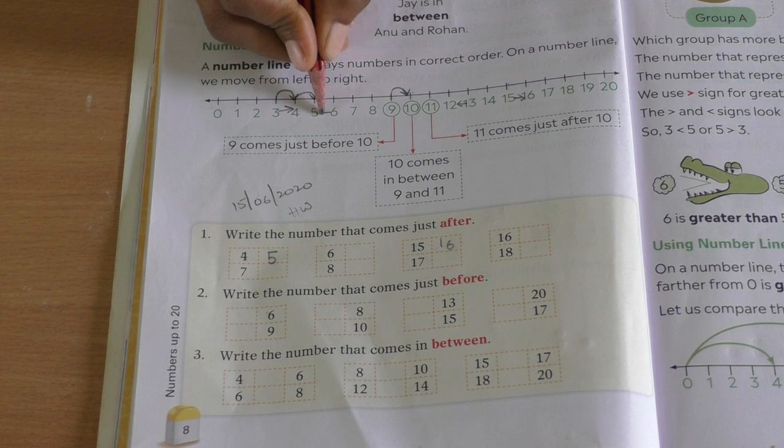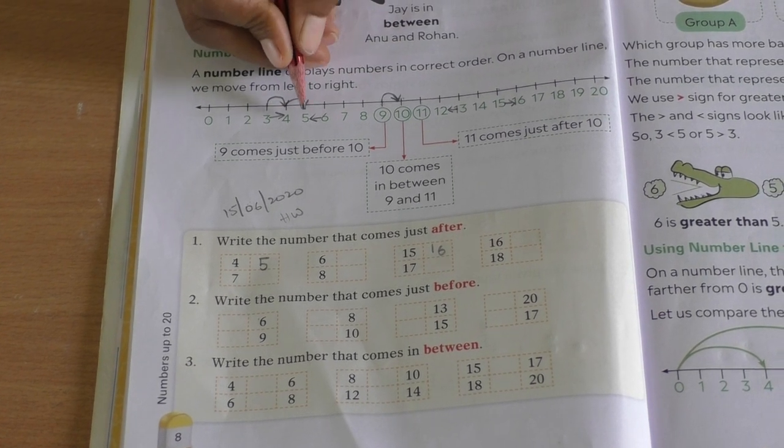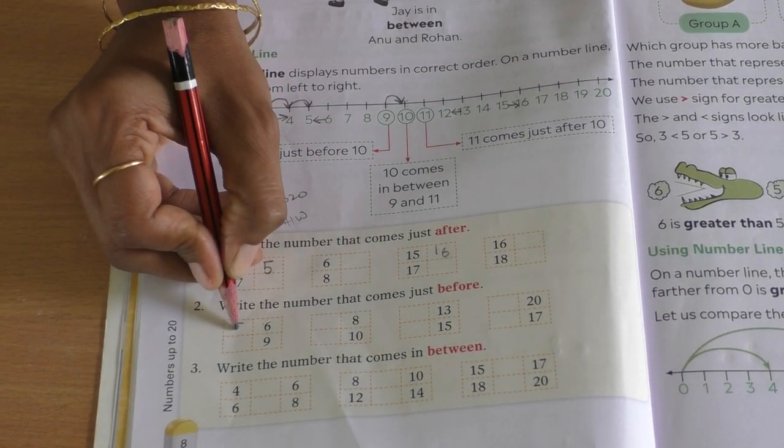6 in number line, the number which comes in front of 6 is 5. So we write here 5.